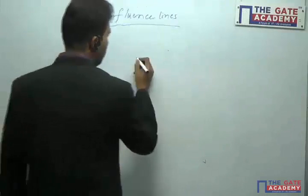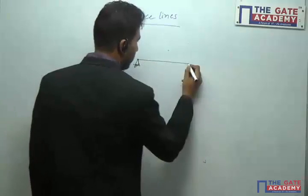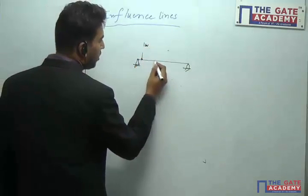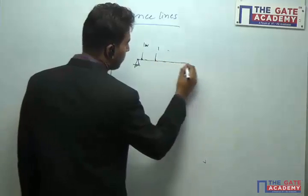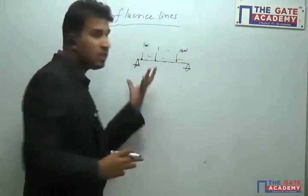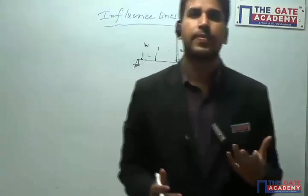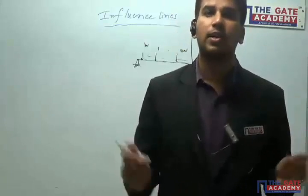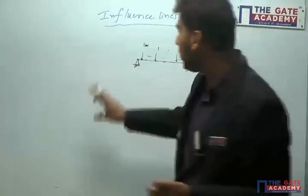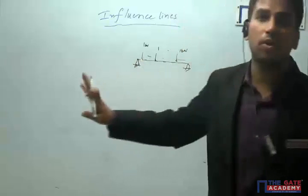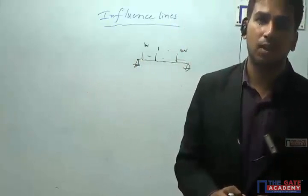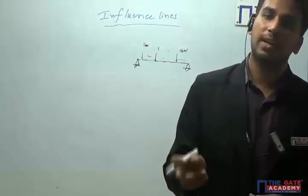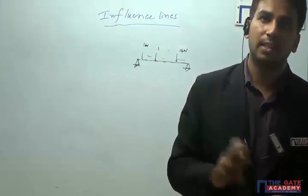For example, I have a simply supported beam here. A 1 kN load is coming and rolling from this position to this position. Because of this rolling, we draw the diagram for the shear force, not only for one particular location but along the length of the beam. For any function — say shear force, bending moment, or reaction — that particular diagram or line is called an influence line diagram.